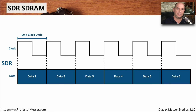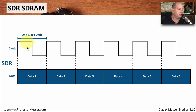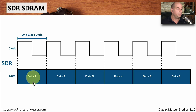Let's visually look at single data rate and how it is synchronized with the clock inside of our computer. Looking at the clock signal, you can see there is an upper and lower as the clock is rising and falling on each individual clock cycle. We have one, two, three, four, five, and six total clock cycles on this diagram. With each clock cycle we're able to transfer one piece of data — the first clock cycle transfers the first data, the second clock cycle transfers data number two, and so on. That's one significant characteristic of the single data rate: for every single clock cycle there is a single piece of data.